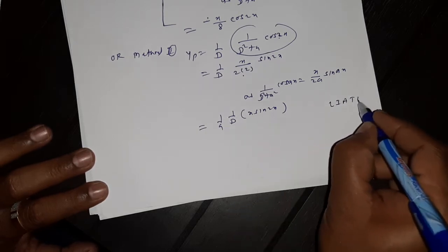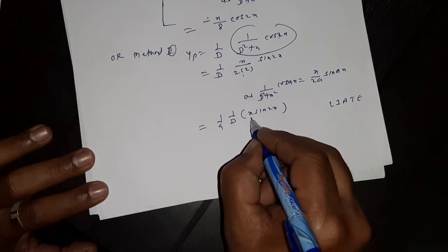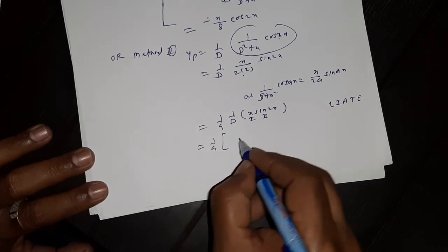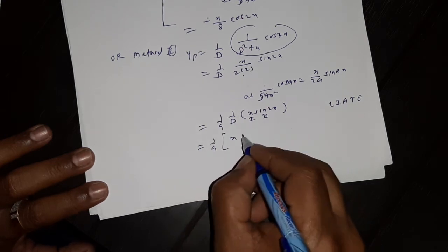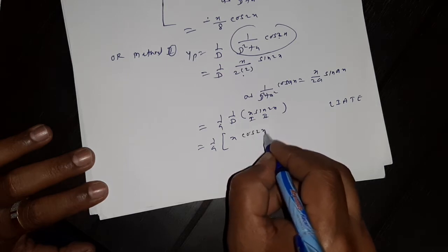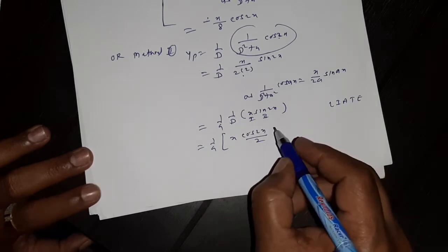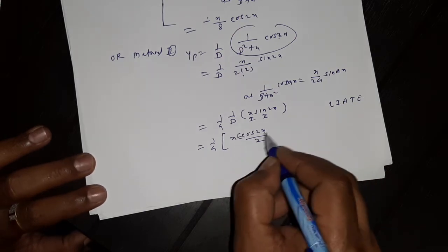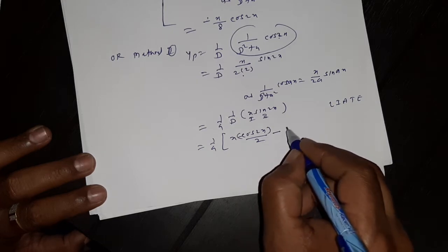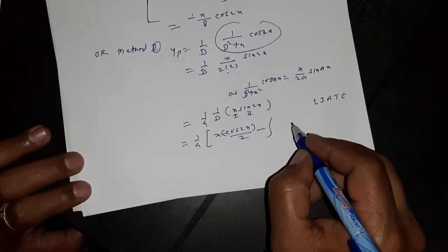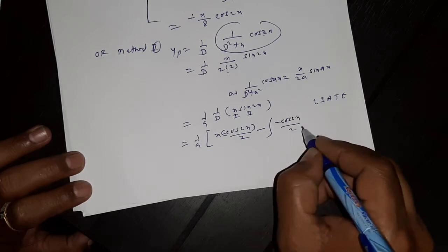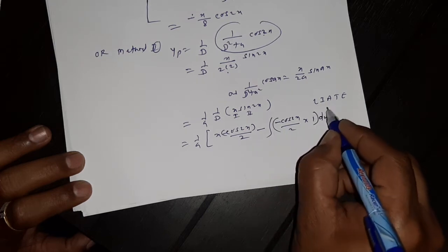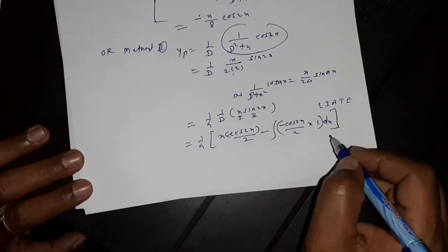Using integration by parts (LIATE): x is the algebraic function and sin(2x) is the trigonometric function. So (1/4)[x · (-cos(2x)/2) - integral of (-cos(2x)/2) · 1 dx]. Integration of sin(2x) = -cos(2x)/2, and derivative of x is 1. Applying the parts rule: integral of first × second = first × integral of second minus integral of (integral of second × derivative of first).